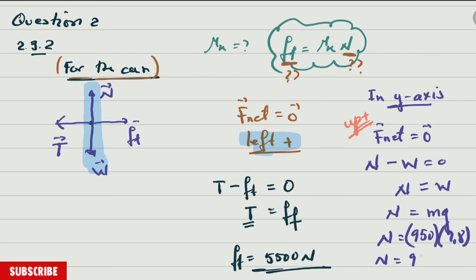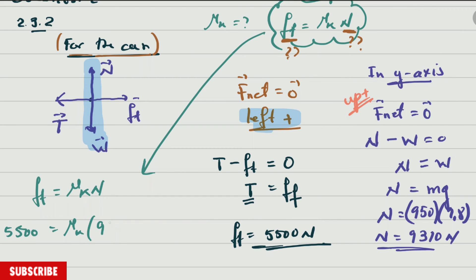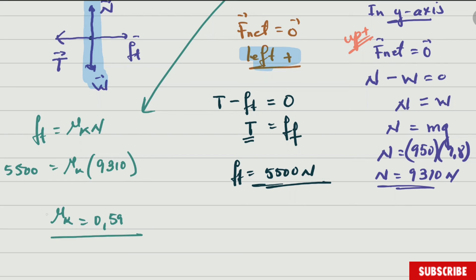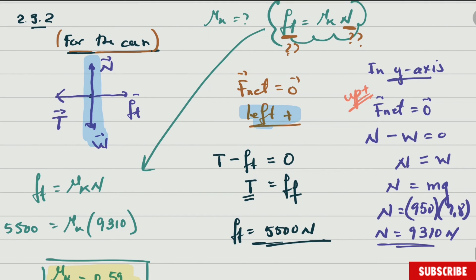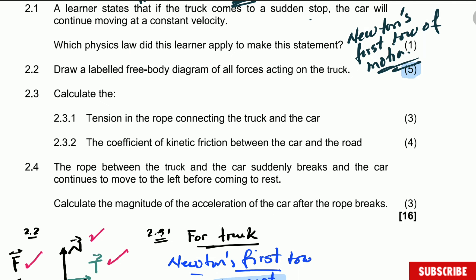Now substituting into the friction formula: 5,500 equals kinetic coefficient of friction multiplied by 9,310. Solving, the kinetic coefficient of friction equals 0.59 — no units, as it is a dimensionless quantity. You can write this all in one equation, but doing it step by step ensures nothing is missed.